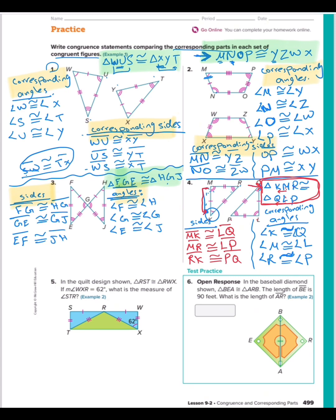Let's see question number five. In the quality design shown, RST congruent to RWX. If the measure WXR is 62, what is the measure of STR? So we know this X, right? X with T. So measure STR equals 62, same. This is 62.